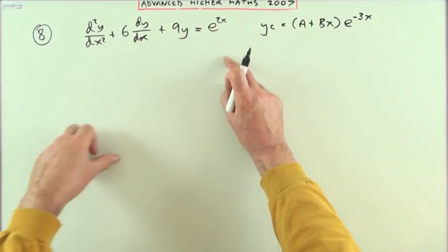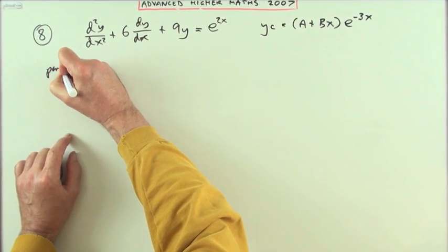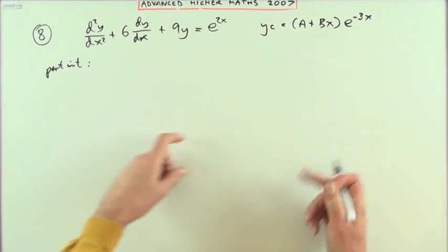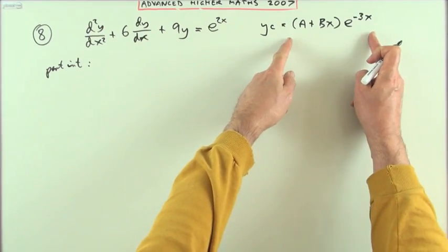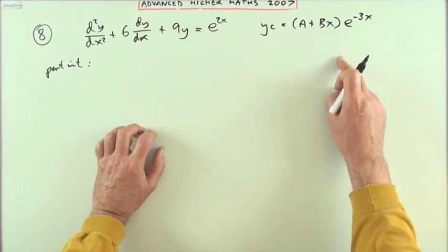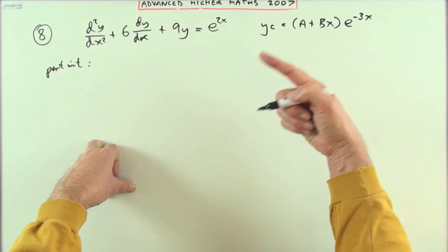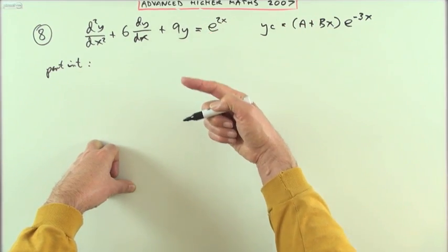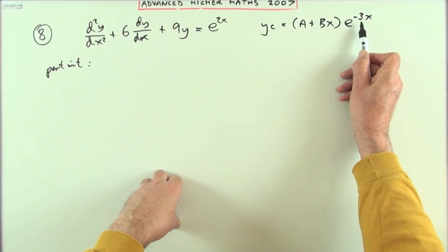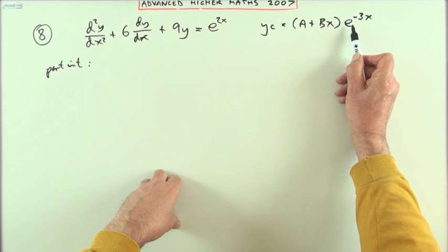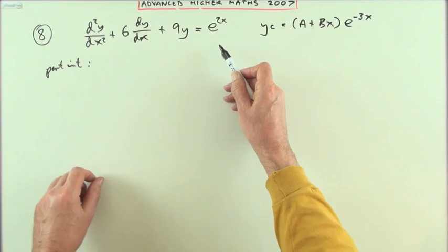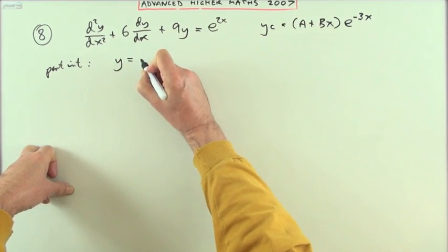Now I've got to solve for that particular function of x. I want the particular integral. First of all, check it doesn't clash with one of these answers. The complementary function is the value you could put into this to get zero as an answer. If this happened to be one of those, that would be no use. If it clashed, I'd have to multiply by x or x².